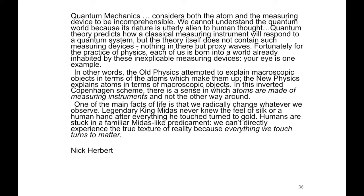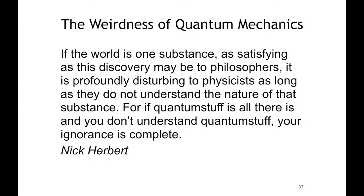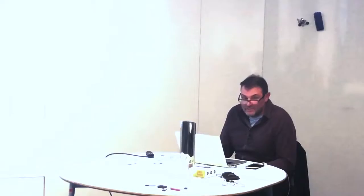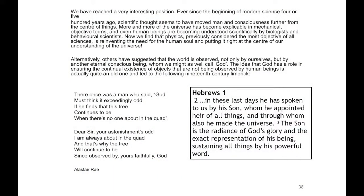Let's take a quote. We're getting close to the end now. Quantum mechanics considers both the atom and the measuring device to be incomprehensible. We cannot understand the quantum world because its nature is utterly alien to human thought. Quantum theory predicts how a classical measuring instrument will respond to a quantum system. But the theory itself does not contain such measuring devices. Nothing in there but proxy waves of quantum waves. Fortunately for the practice of physics, each of us is born into a world already inhabited by these inexplicable measuring devices. In other words, the old physics attempted to explain macroscopic objects in terms of the atoms which make them up. The new physics explains atoms in terms of macroscopic objects. In this inverted Copenhagen scheme, there is a sense in which atoms are made of measuring instruments and not the other way around.